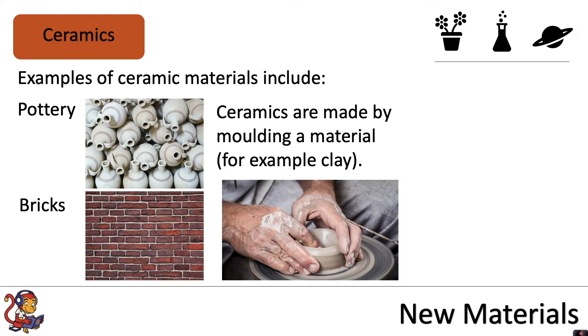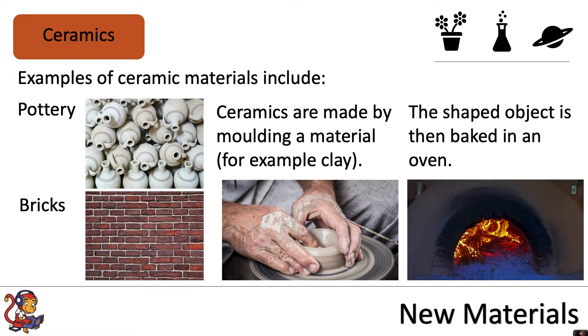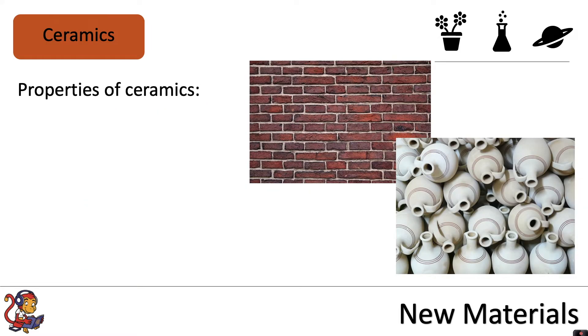Ceramics are made by molding a material, for example clay, and the shaped object is then baked in an oven. Ceramics all share similar properties.